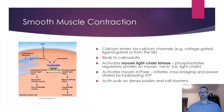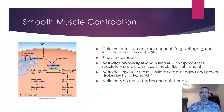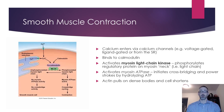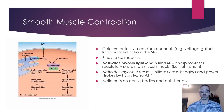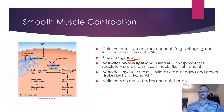Once calcium enters the cytoplasm, the mechanism of contraction in smooth muscle still uses actin and myosin, but there are key differences from skeletal muscle. There is no troponin-tropomyosin complex. When calcium enters, it binds to calmodulin. The calcium-calmodulin complex then activates myosin light chain kinase (MLCK). A kinase phosphorylates something — in this case MLCK phosphorylates a regulatory protein on the myosin neck (the light chains located in the neck region of the golf-club-shaped myosin).